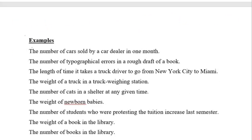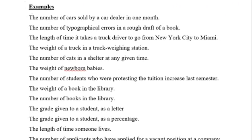Now here we have some examples based on discrete and continuous. Pause the video and determine whether each is discrete or continuous, then verify your answer. Example 1: the number of cars sold by a car dealer in one month — this is a discrete random variable, because the count could be 0, 1, 2, 3, and so on, not a fractional value. Example 2: the number of typographical errors in a rough draft of a book — again, errors could be 0, 1, 7, 9, 13, so it is a discrete random variable.